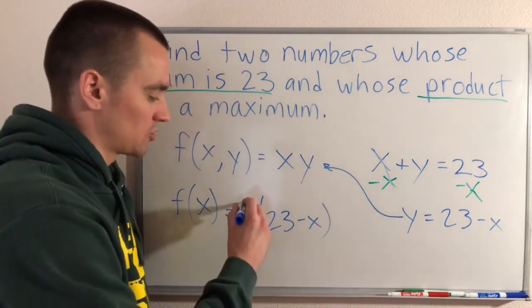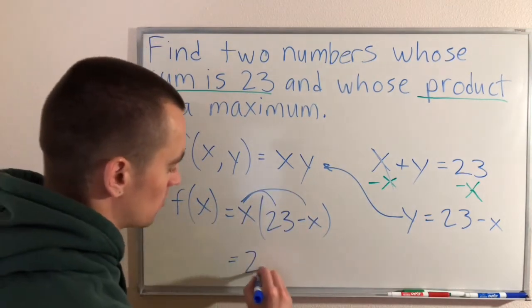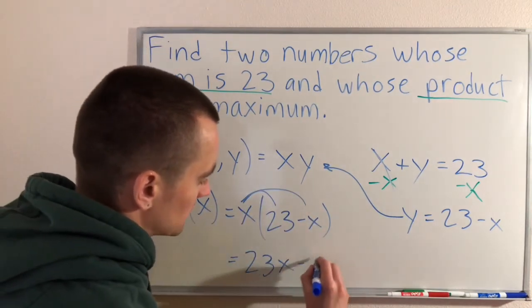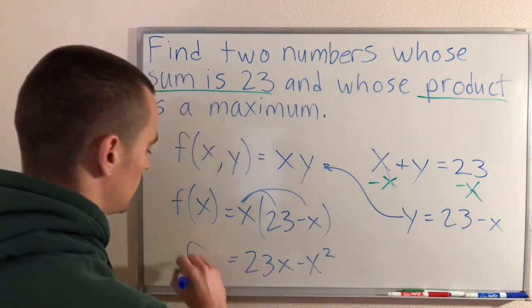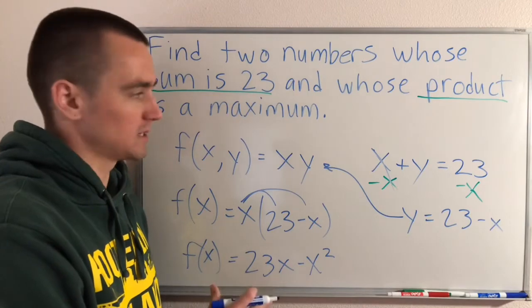So this is now the function that we want to maximize. We want to figure out where this is as big as possible. So to do that we will find the critical number and then figure out basically if that's a maximum or a minimum.